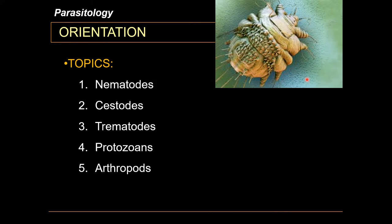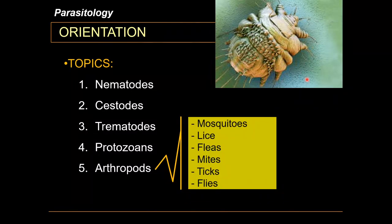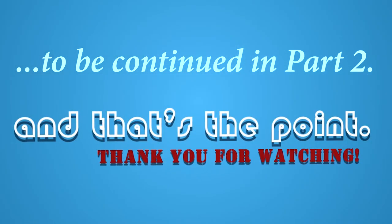Arthropods are your insect-type parasites, which include mosquitoes, lice, fleas, mites, ticks, and flies. As you will learn in succeeding lectures, arthropods are not all insects — arthropods are higher in the taxonomic chain than insects. This classification also includes caterpillars, scorpions, spiders, and most organisms that bite humans. Mites, for example, are microscopic organisms with eight legs, so they do not count as insects but rather as arthropods.